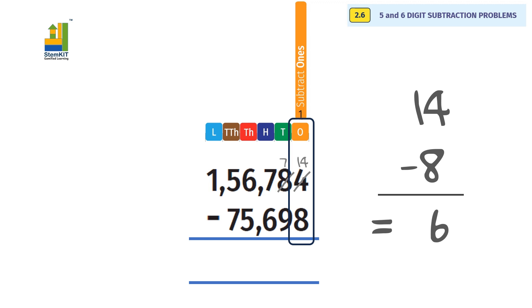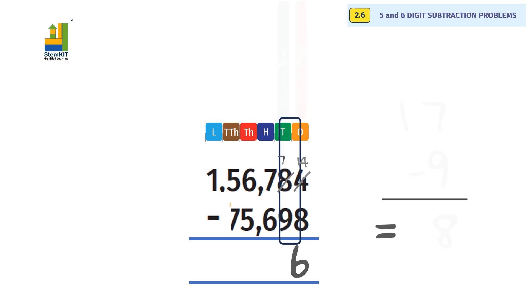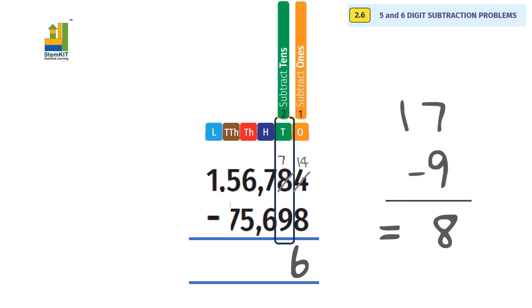Notice 8 in hundreds becomes 7 after borrowing. Subtracting tens: 7 minus 9 is not possible. Borrow from 7 in hundreds. 17 minus 9 equals 8.